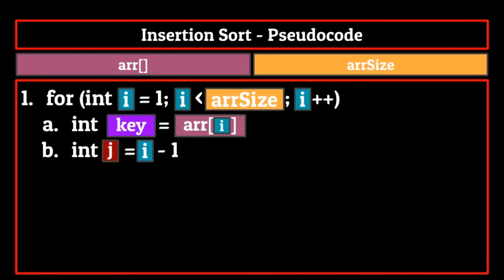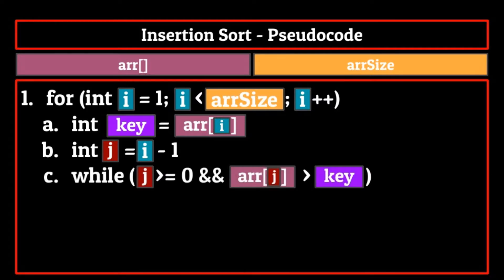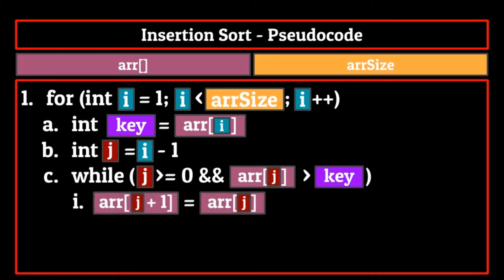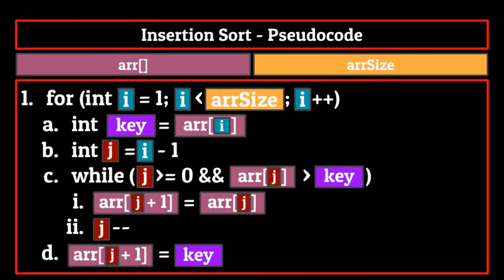Now here comes the insertion part. While j is greater than or equal to zero, and the element at index location j is greater than the key element, we place the element that's at index location j at index location j plus one. This essentially moves the element at j up one, then we decrement j. Finally, after our while loop has concluded, we set the element at index location j plus one to be equal to the key element that we stored at the beginning of the for loop. That right there is the entirety of insertion sort.